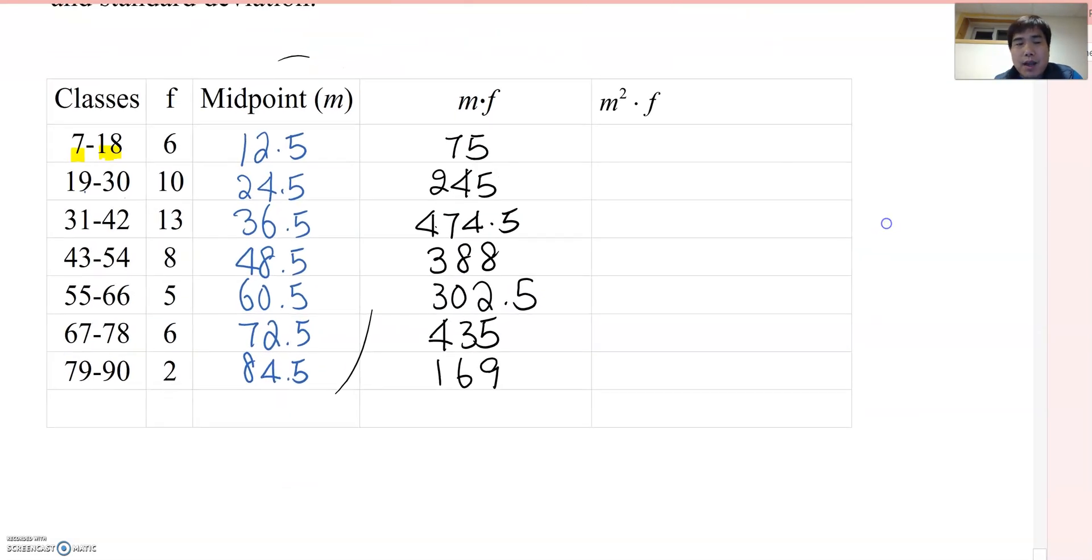Therefore, finding mean, I'm gonna find out total frequency first and then total data set. So if you do it, the total frequency becomes 50 and total data value becomes 2089.